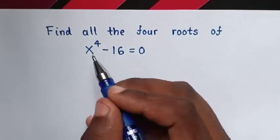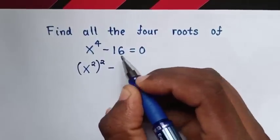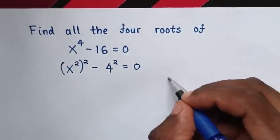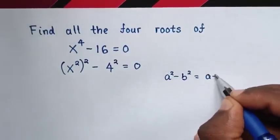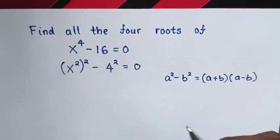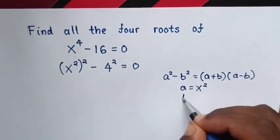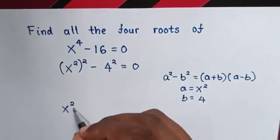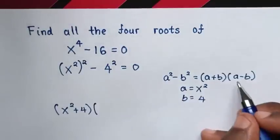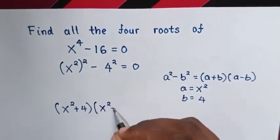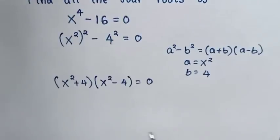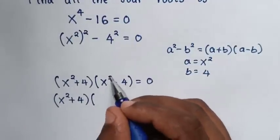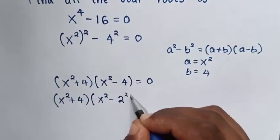First, we rewrite x⁴ - 16 as (x²)² - (4)² = 0. This equation is in the form of a perfect square difference, so we apply the rule a² - b² = (a + b)(a - b), where a = x² and b = 4. This gives us (x² + 4)(x² - 4) = 0, and note that x² - 4 is the same as x² - 2².